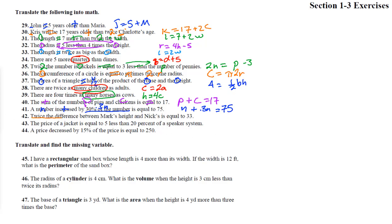Number 42: twice the difference between Mark's height and Nick's height. We take the difference — which is subtraction — between Mark's height and Nick's: that's M minus N. Then we twice that: 2(M − N) = 33.